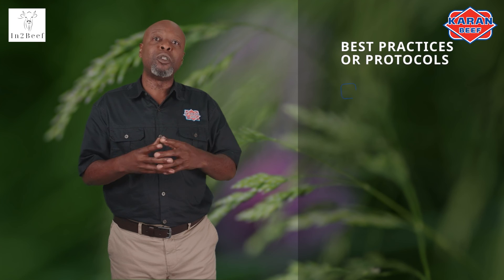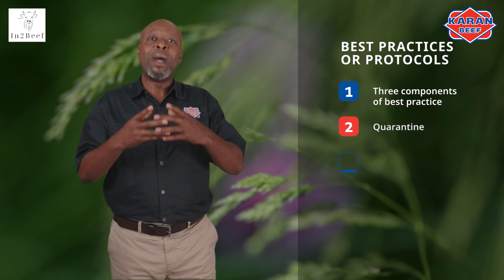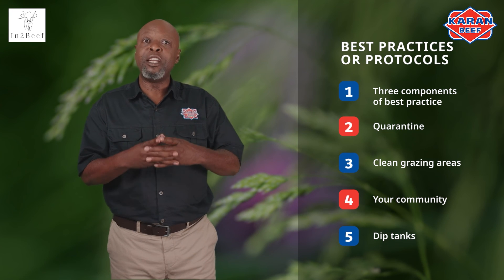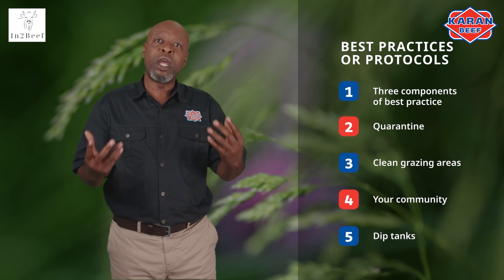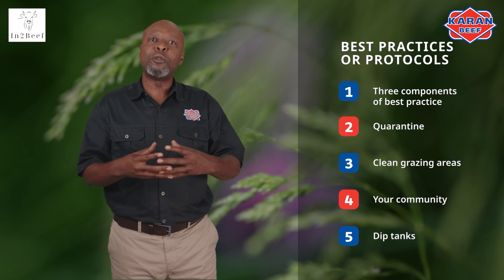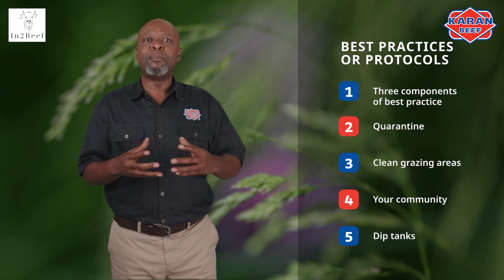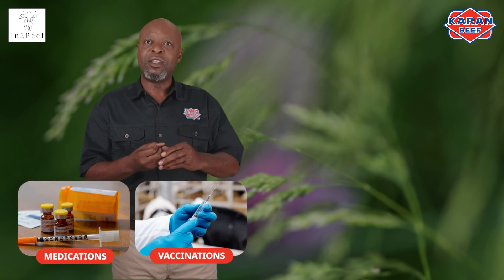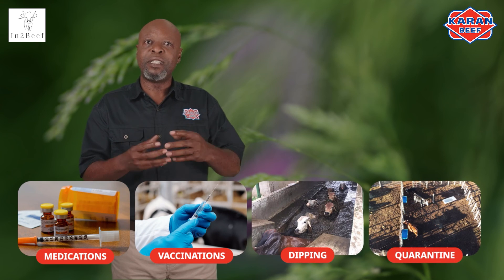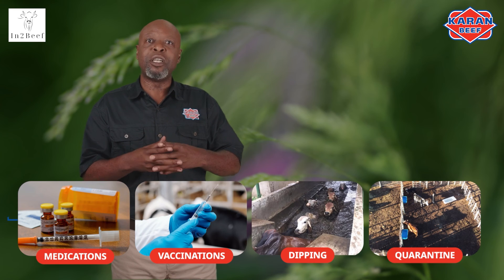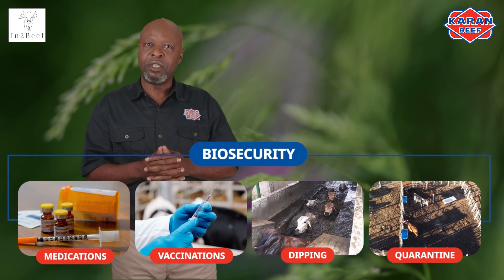This episode highlights the best practices or protocols you should be following when introducing new cattle to your herd, and refers to the steps that need to be taken to prevent diseases from occurring on your farm or spreading within or between the herds in your community. Some of these preventative measures include medications, vaccinations, dipping, and quarantine facilities. On larger commercial farms, these measures are commonly referred to as biosecurity.